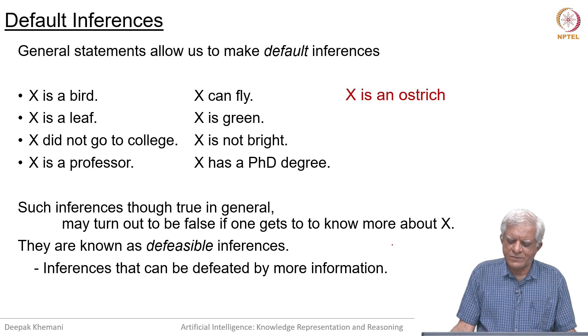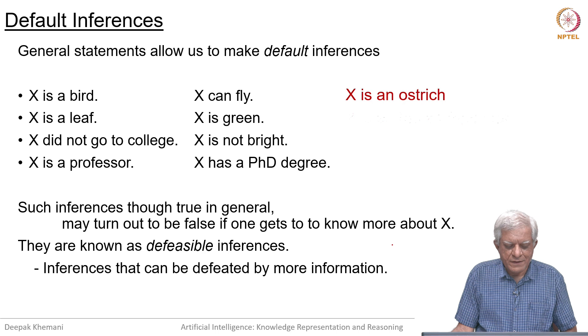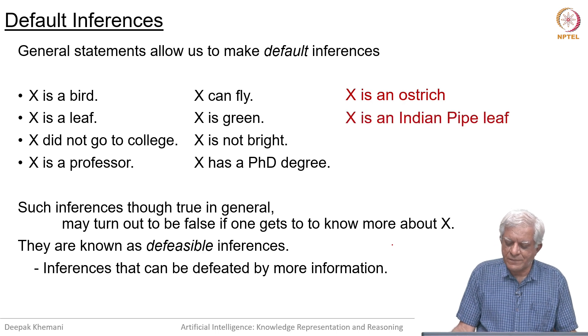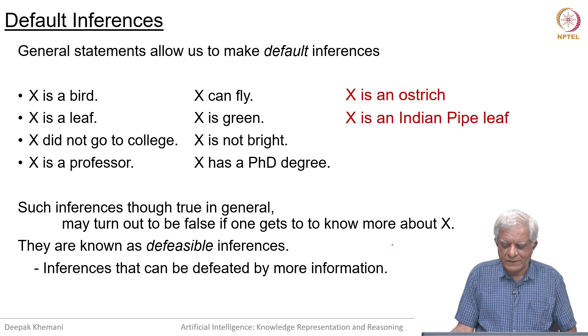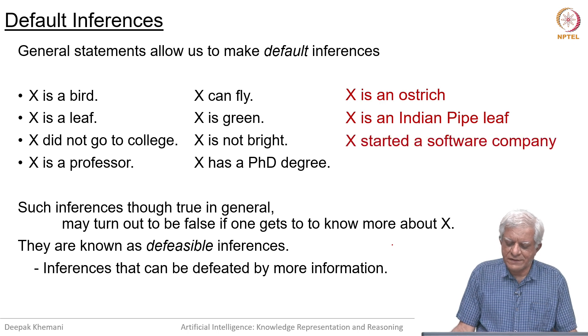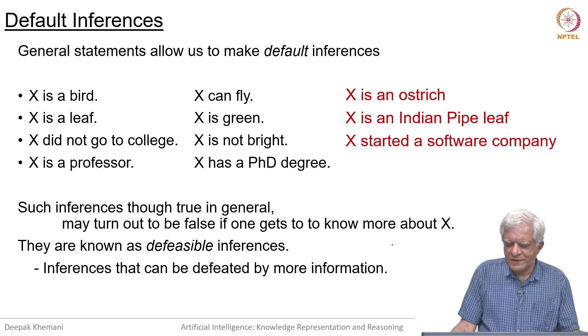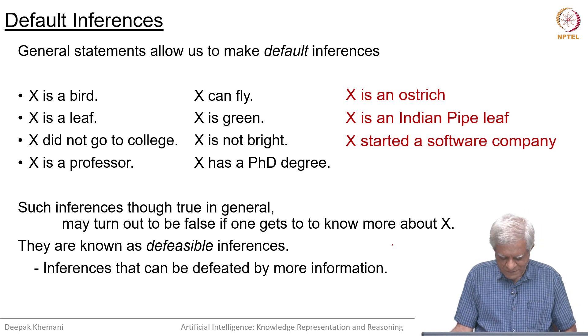For example, in the case of x, you might come to know that the x that we are talking about is an ostrich. Or if you are talking about leaves of a plant, then it might turn out that you are talking about the Indian pipe plant whose leaves are white. If you are talking about x not going to college, then this x could be one of those people who started a software company and became one of the richest men in the world.